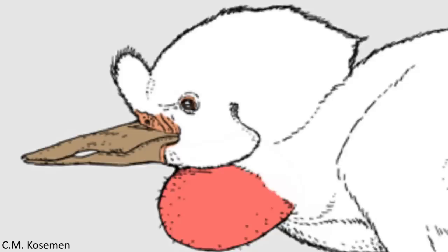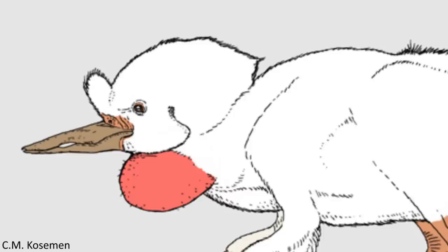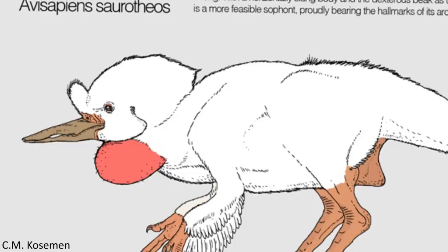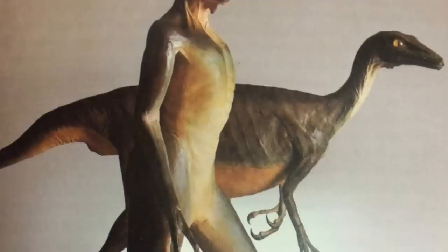Inspired by recent discussions of the Dinosauroid, paleo-artist C.M. Kosemen has actually reconstructed a much more plausible intelligent dinosaur called Avisapiens saurotheos, which is very notably not humanoid, but instead displays features and characteristics shared by its dinosaurian ancestors, while also being modified as a greater level of intelligence evolved. So the Dinosauroid stands out as a weird but fascinating part of the development of speculative zoology.